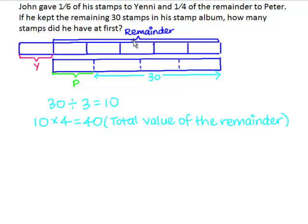Looking at this part labeled the remainder, we see that the remainder is actually 5 units of the total. So to find 1 unit of the total, we take 40 divided by 5, which gives us 8.